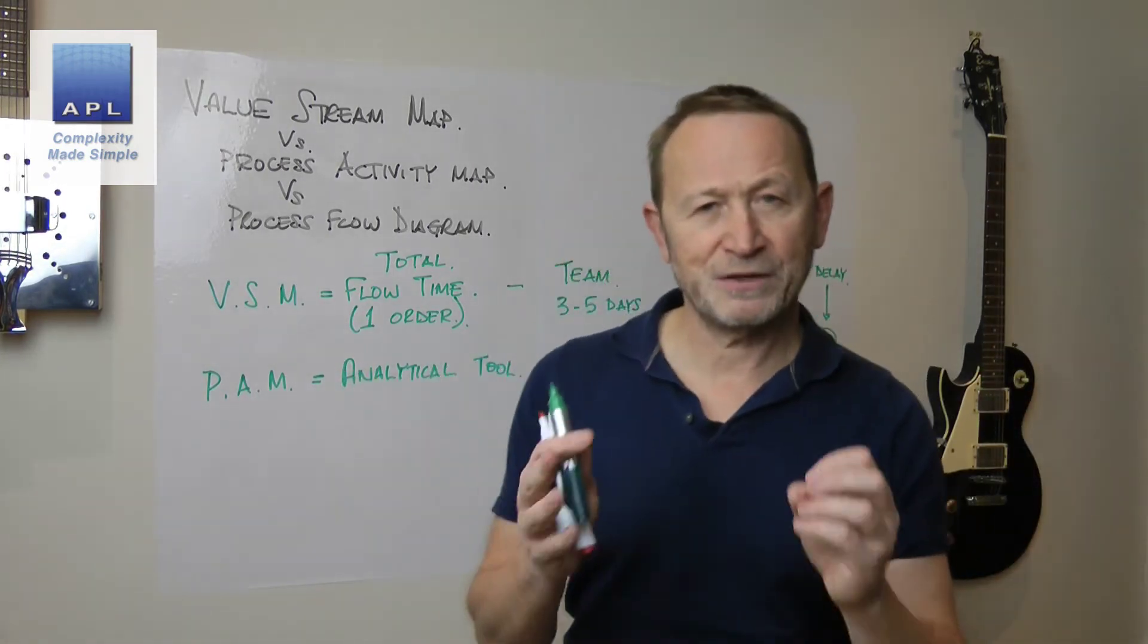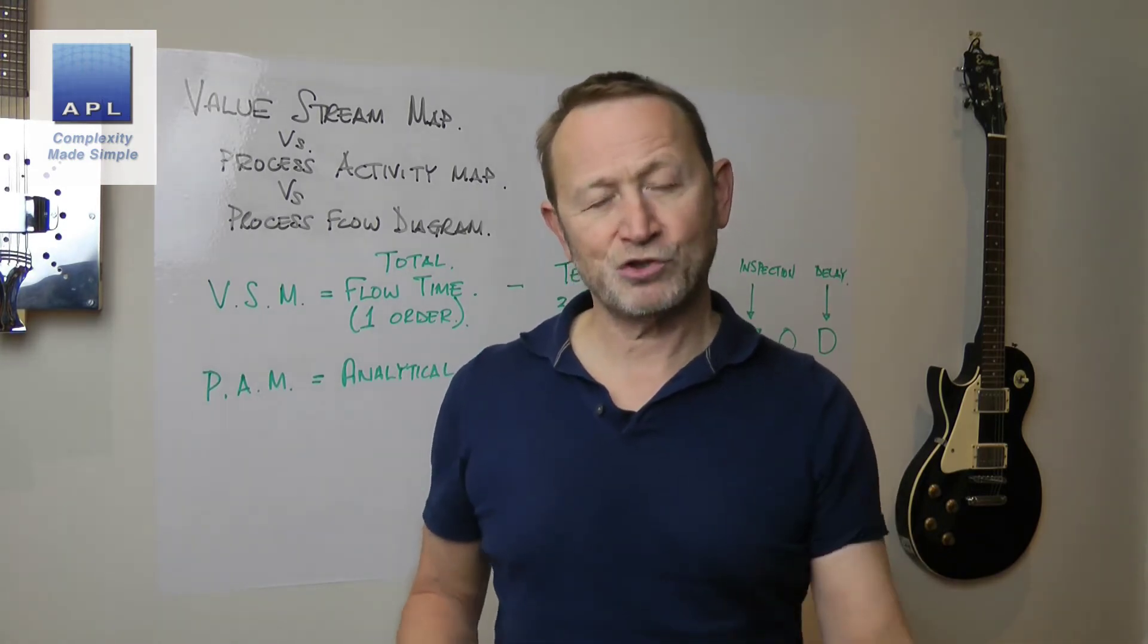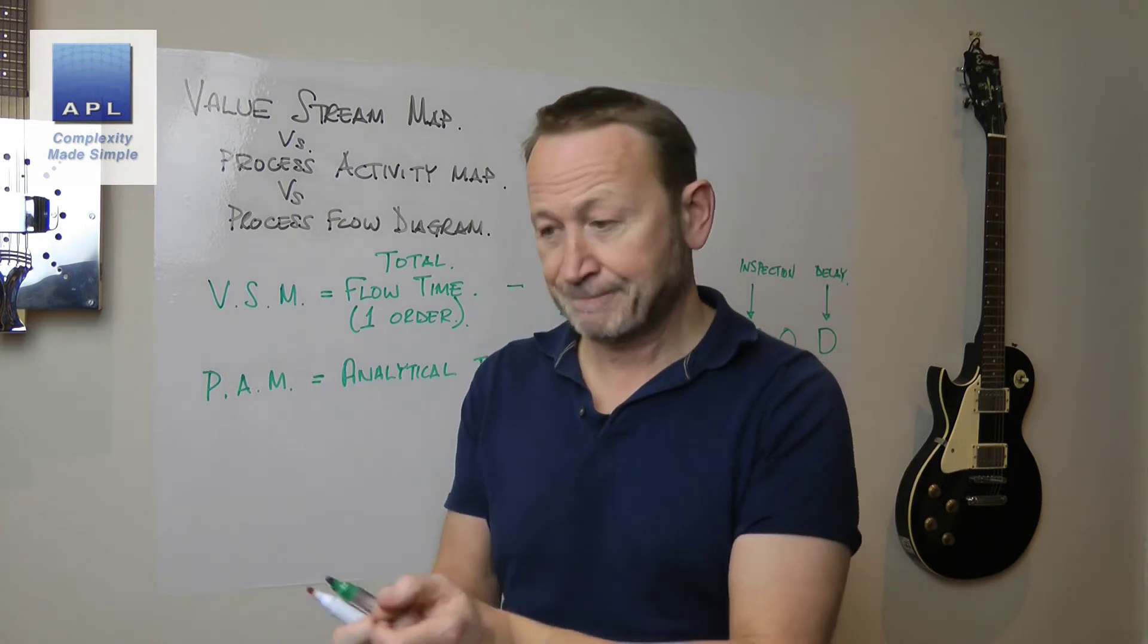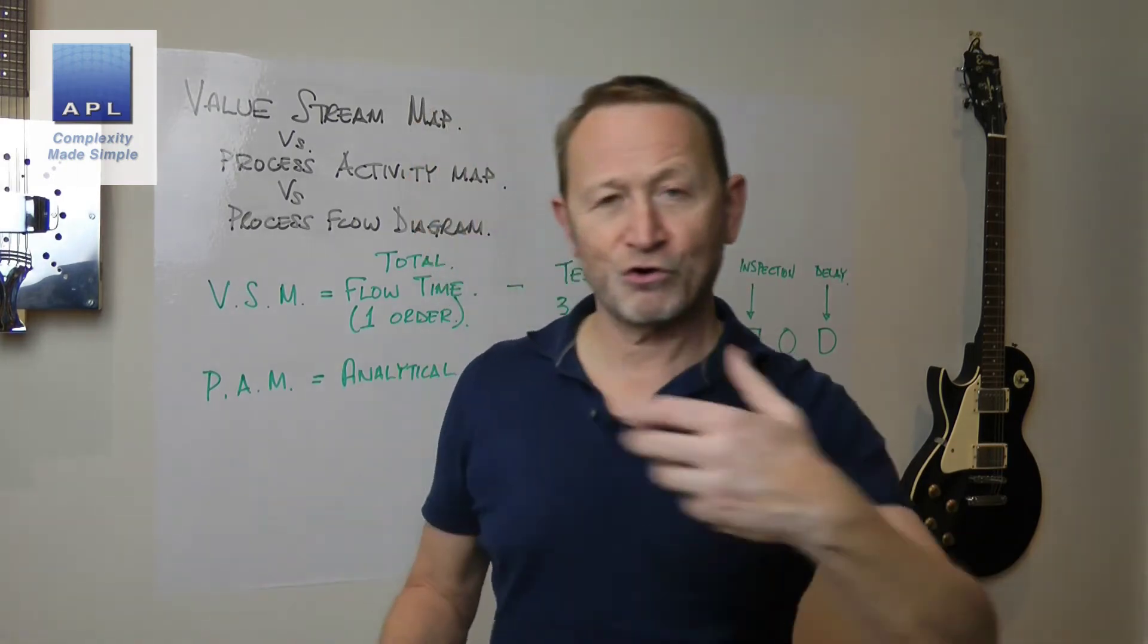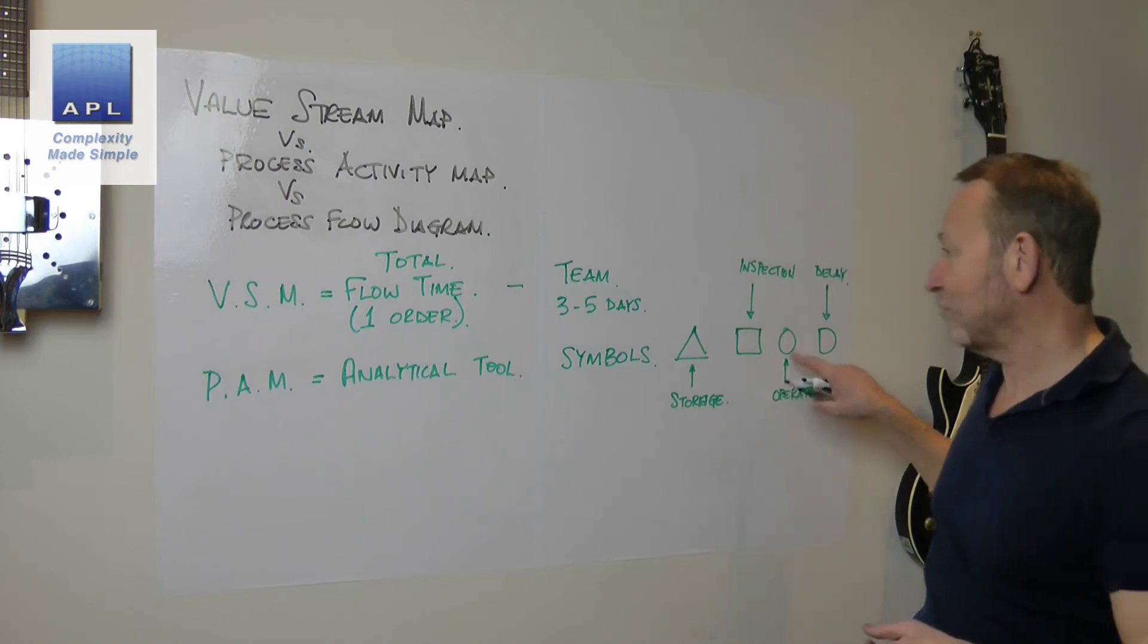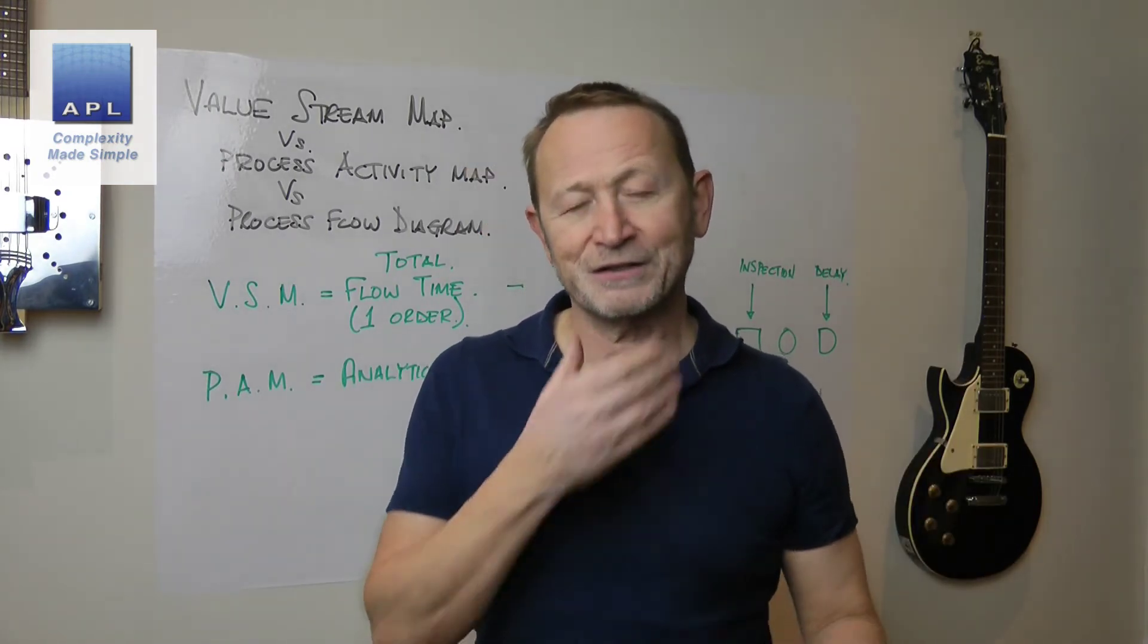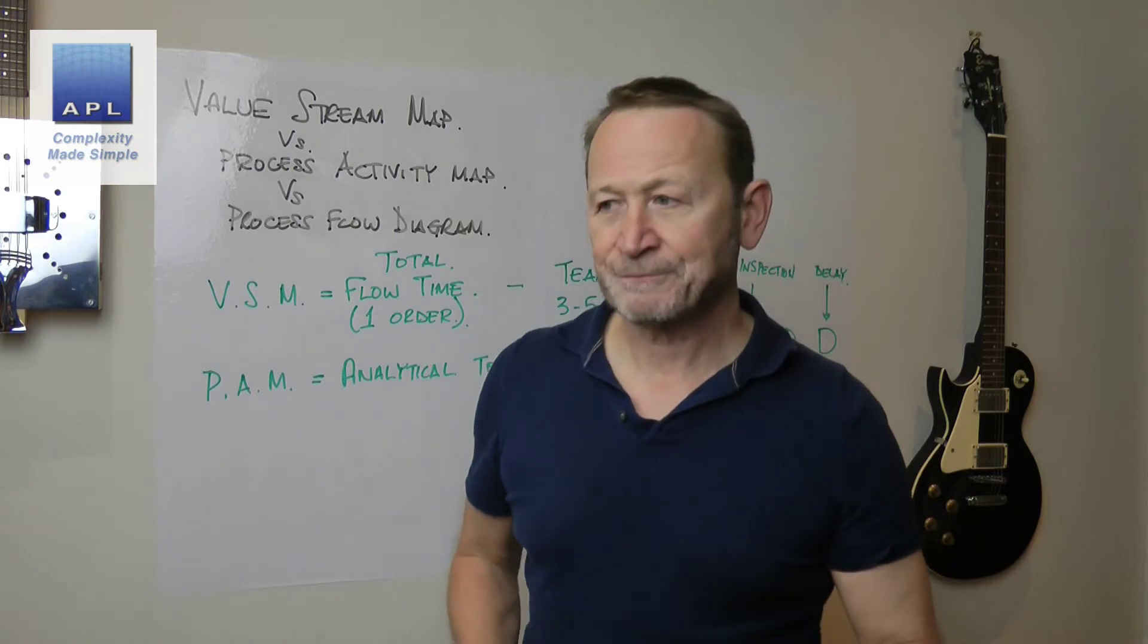The process activity map is a work study tool. When I was 20 years of age, I was taught to be a work study engineer and the process activity map was one of the techniques we used to do a current state analysis. How much time do we spend walking, traveling, storing, inspecting? How much time do we actually spend adding value in operation? You can do a current state and then look at where the waste is and try to simplify the process.